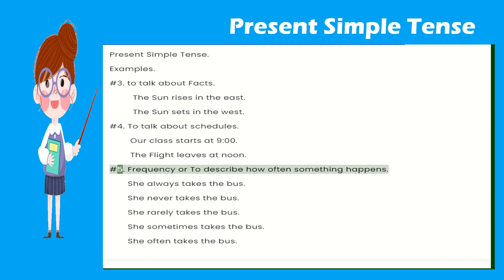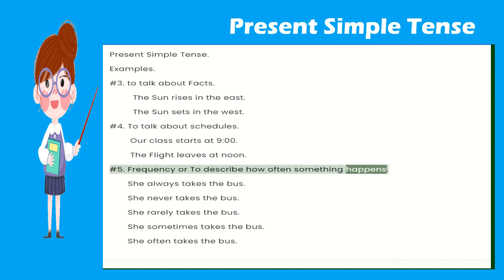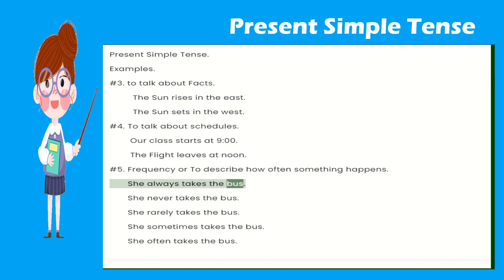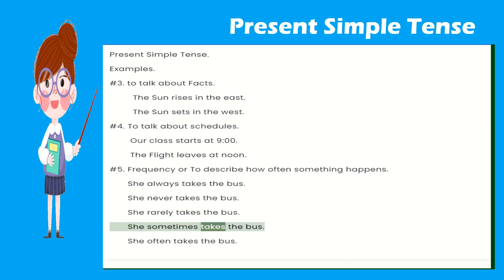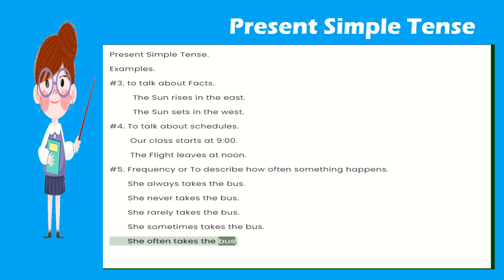Number five, frequency, or to describe how often something happens: She always takes the bus. She never takes the bus. She rarely takes the bus. She sometimes takes the bus. She often takes the bus.